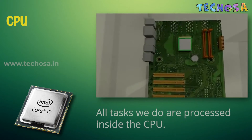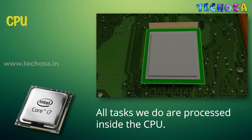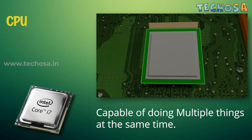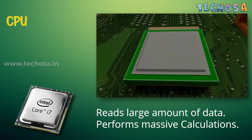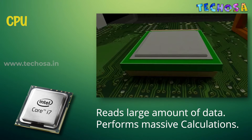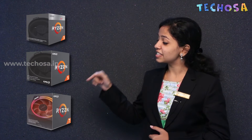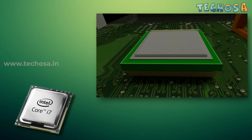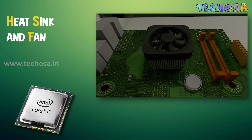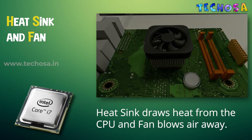The CPU is often referred to as the brain of the computer. It is directly connected to the motherboard. All tasks we do on a computer are processed inside the CPU. CPUs are capable of doing multiple things at the same time — they read large amounts of data quickly, arrange it, and perform massive calculations to run your programs. Even though it looks small, CPUs are very expensive. Common examples include Intel Core i3, i5, i7, and CPUs from AMD called Ryzen 3, 5, 7, and so on. As the CPU is used it can get very hot, so we use a heat sink that draws away the heat, with a fan on top that blows the air away.